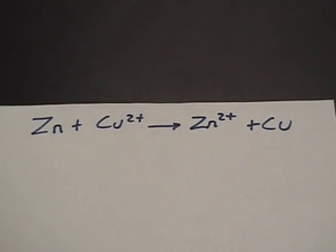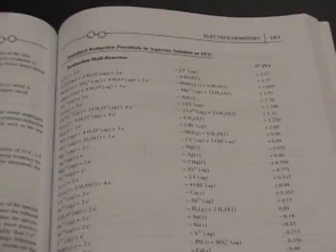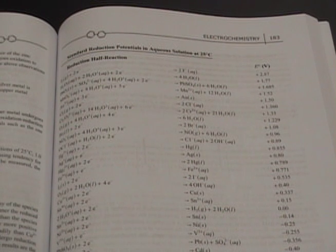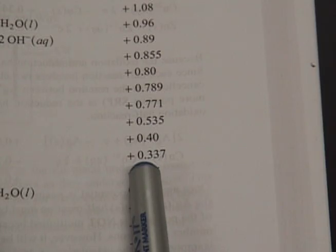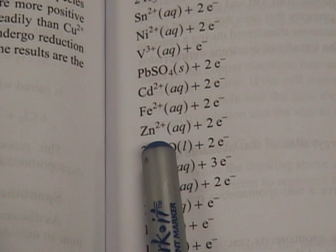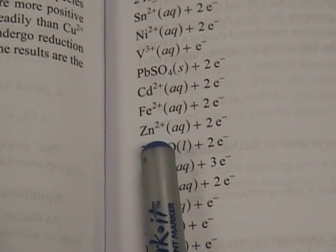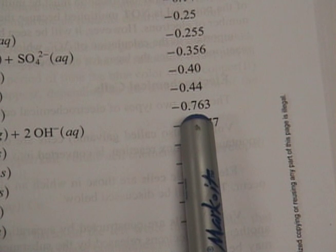Now let me show you three examples. Suppose we want to figure out the standard cell potential of zinc and copper. We go to our list and find the substances. For copper 2 positive, the cell potential is positive 0.337. For zinc 2 positive, we find its cell potential is negative 0.763.